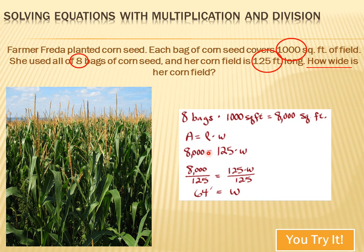And we just figured out that the area of Farmer Frida's corn field is 8,000 square feet. And we know that the length of corn field is 125 feet. And we know that the area equals that length, 125 feet, times the width. And we're trying to solve for the width. So, to solve for that, we need to divide both sides of the equation by 125, so we isolate that w. And when we do that, we calculate that the width equals 64 feet.